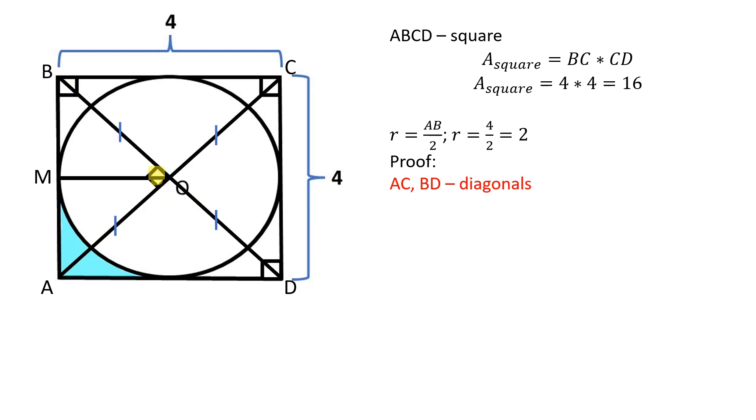The diagonals of a square are equal in length and bisect each other at right angles. Therefore, triangle ABO is an isosceles right triangle.